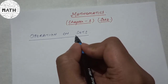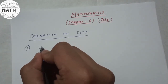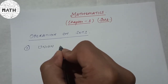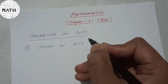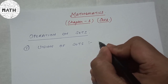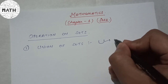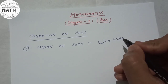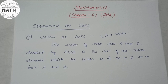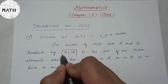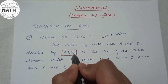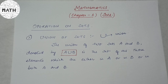Under this topic, the first one is the union of sets. Your union of sets is denoted by a U-shaped symbol. The definition states: the union of two sets A and B, denoted by A union B, is a set of all those elements which are either in A, or in B, or in both A and B.